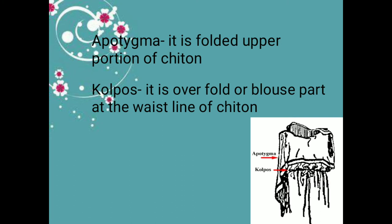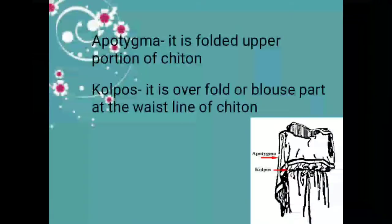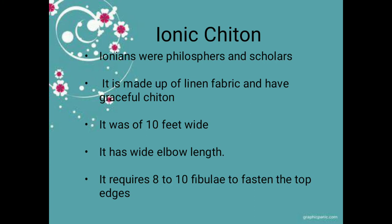Next are the terms apotygma and kolpos. Apotygma refers to the upper portion of the chiton — in Greek the upper portion was called apotygma. Kolpos refers to the blouse part and waistline of the chiton. The main garment of Greek men and women is the chiton, which comes in two types: the Doric chiton and the Ionic chiton.